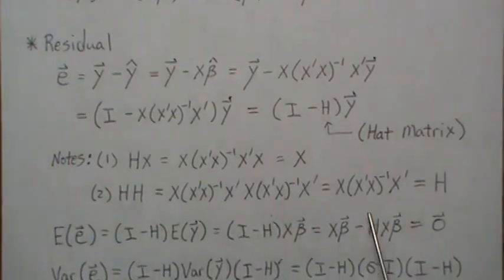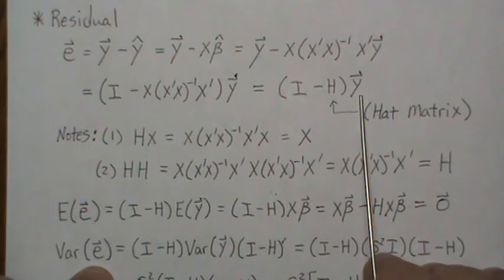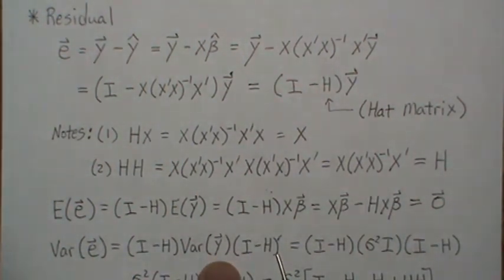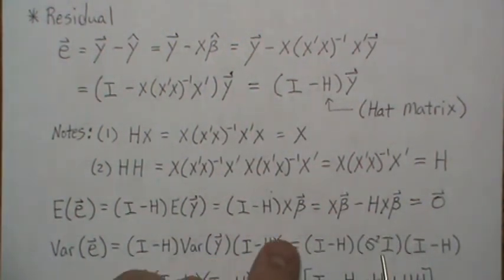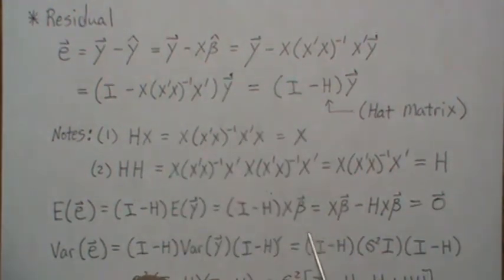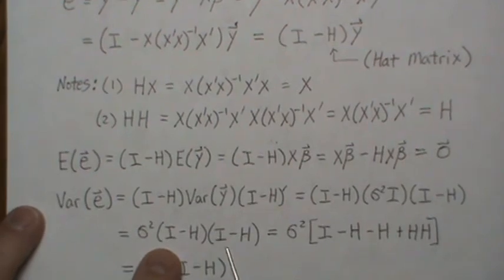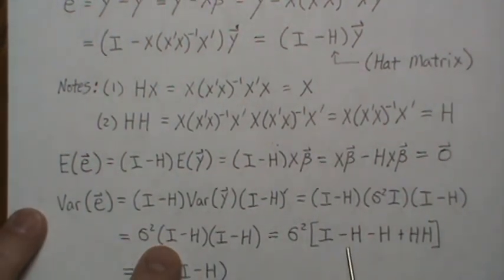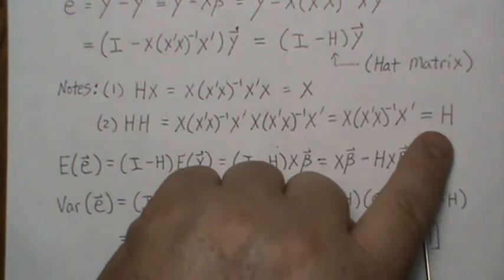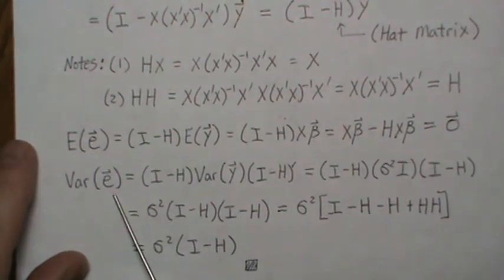Now the variance of the residuals: the matrix I minus H comes out left, that's the variance of Y, and then we transpose it out back. The variance of Y is sigma squared I. Since both I minus H and H are symmetric, taking the transpose just gives I minus H back. Sigma squared is a constant so it comes out front, and the identity goes away. Multiplying out I minus H times I minus H gives I minus H minus H plus H squared. Since H is idempotent H squared equals H, so H minus H cancels, leaving I minus H. The variance of our residuals is sigma squared times I minus H.